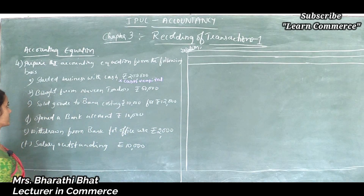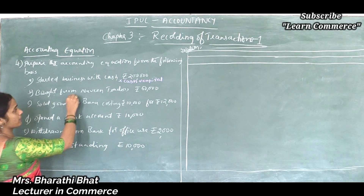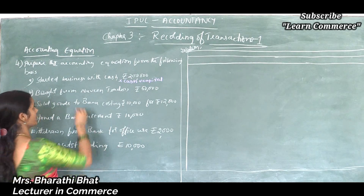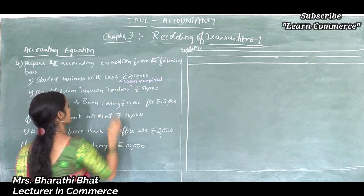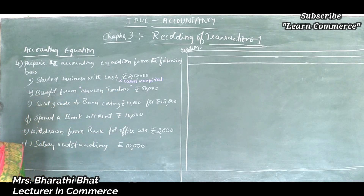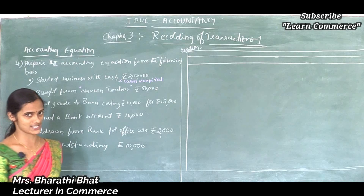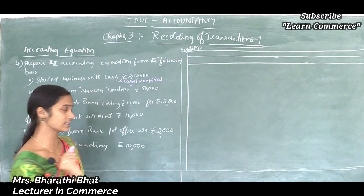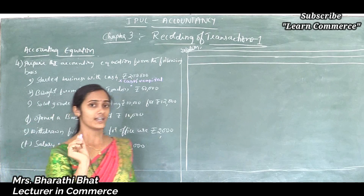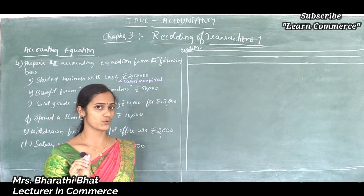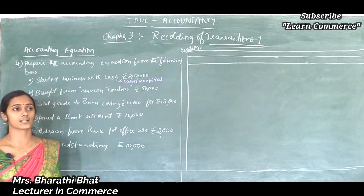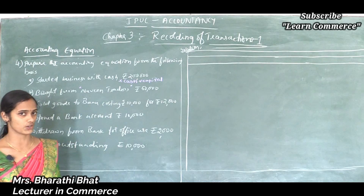Next, see the second one: bought from Naveen Traders. I told you that when a person's name comes, you should assume that transaction is a credit transaction. So who will come here? That person is called creditors. So Naveen Traders is considered as creditors to the organization.